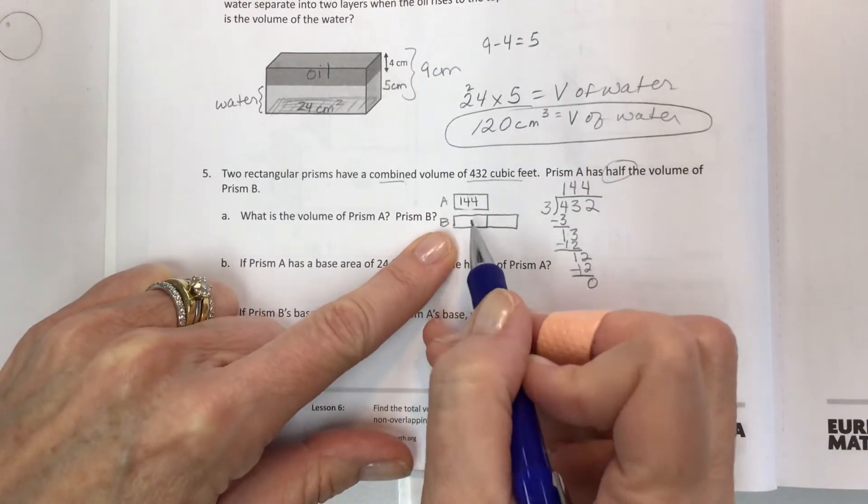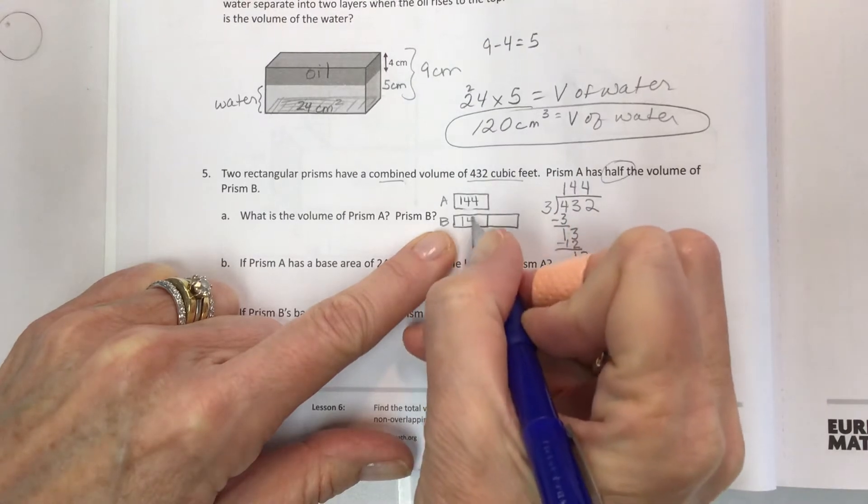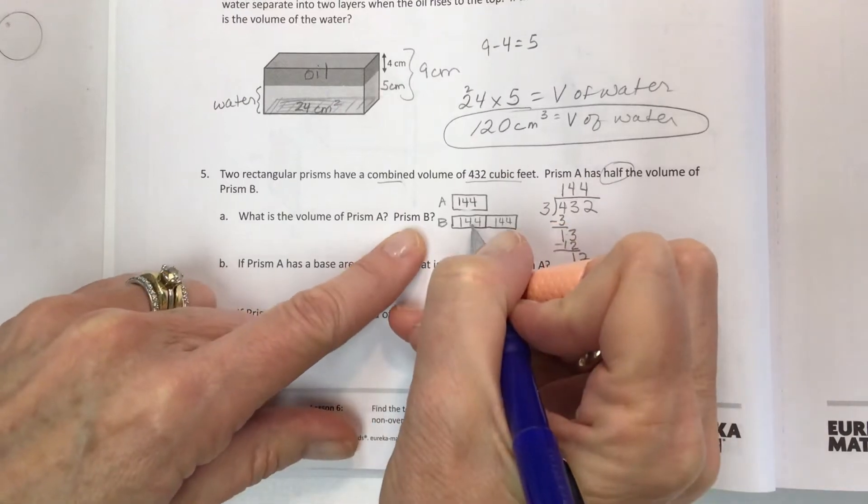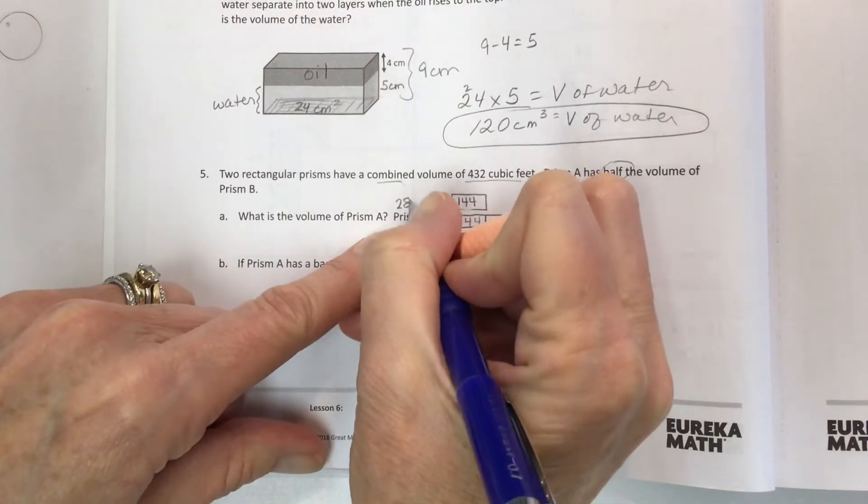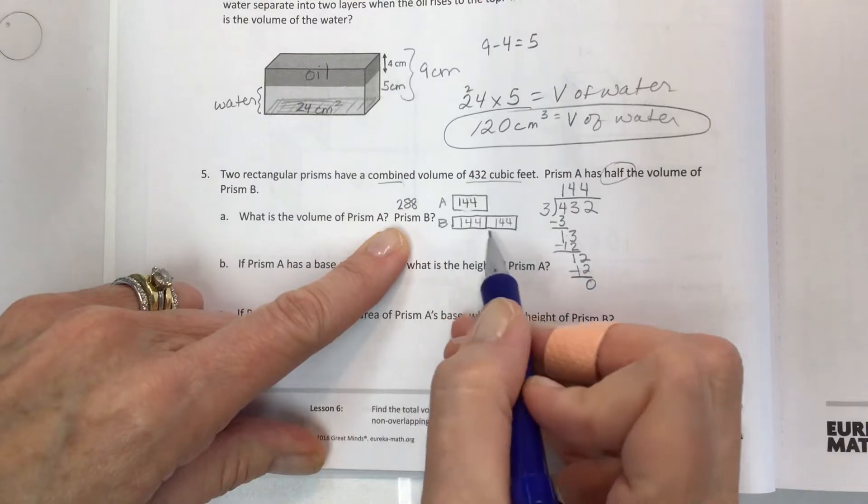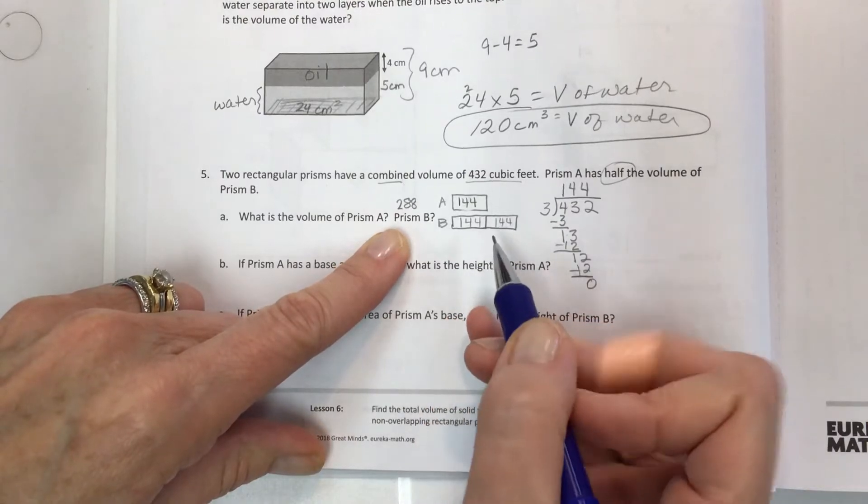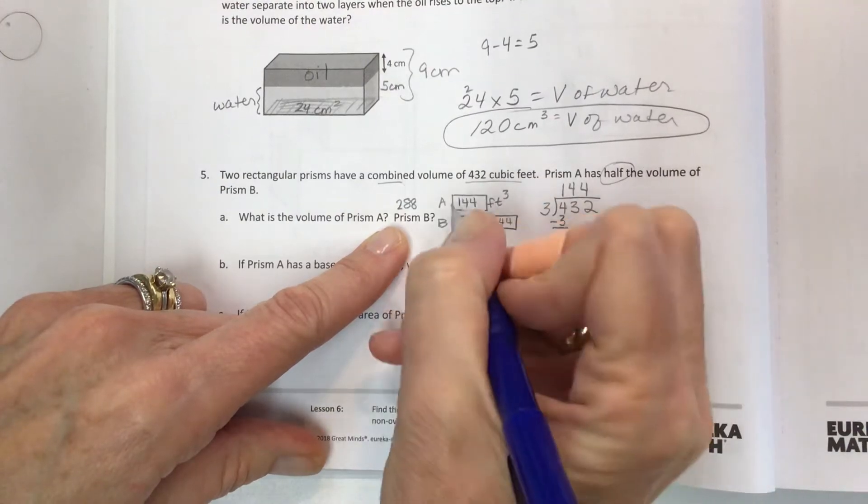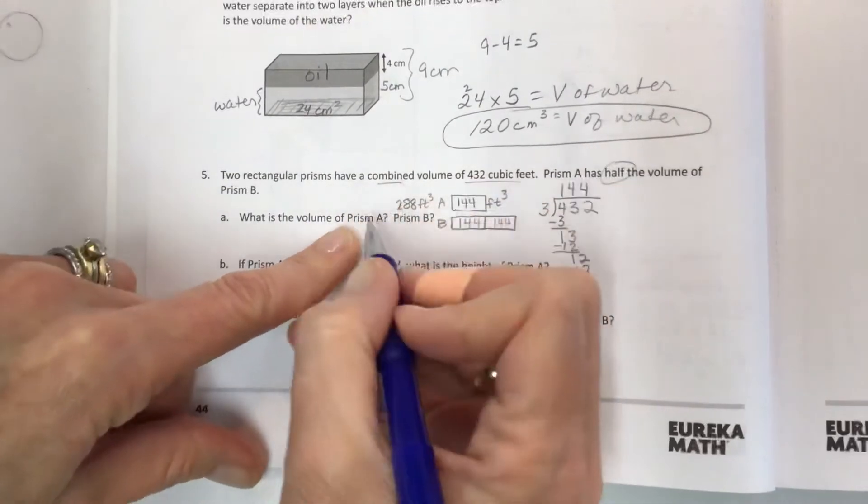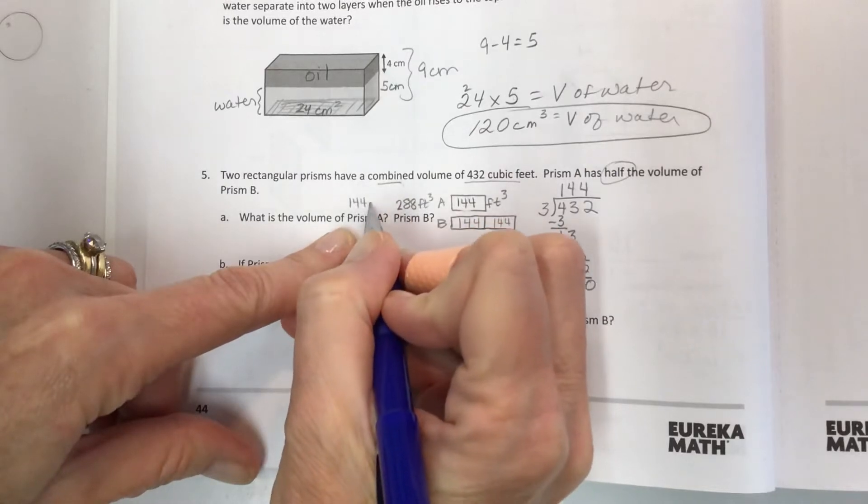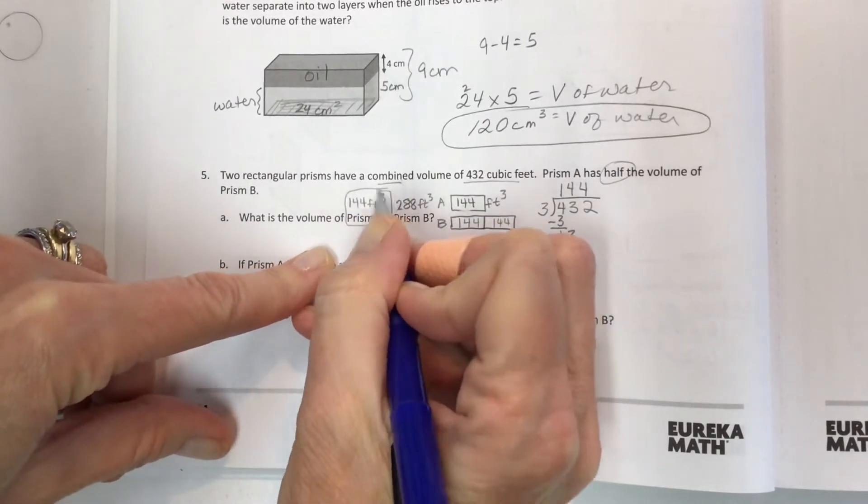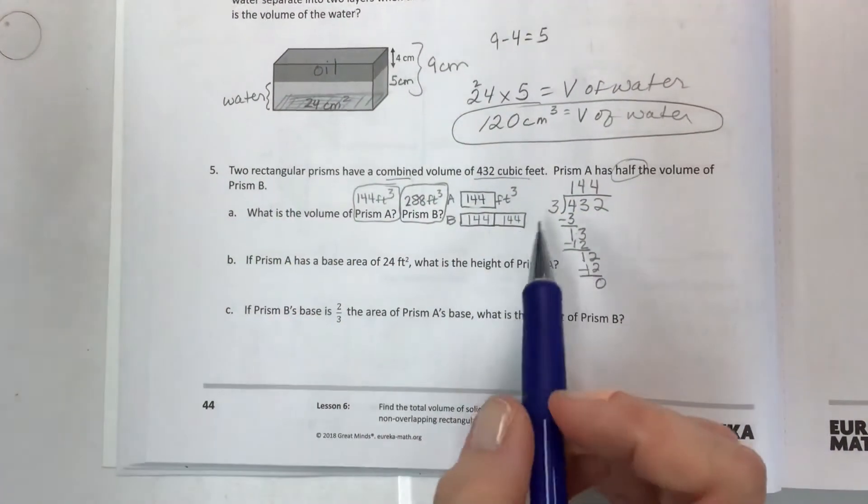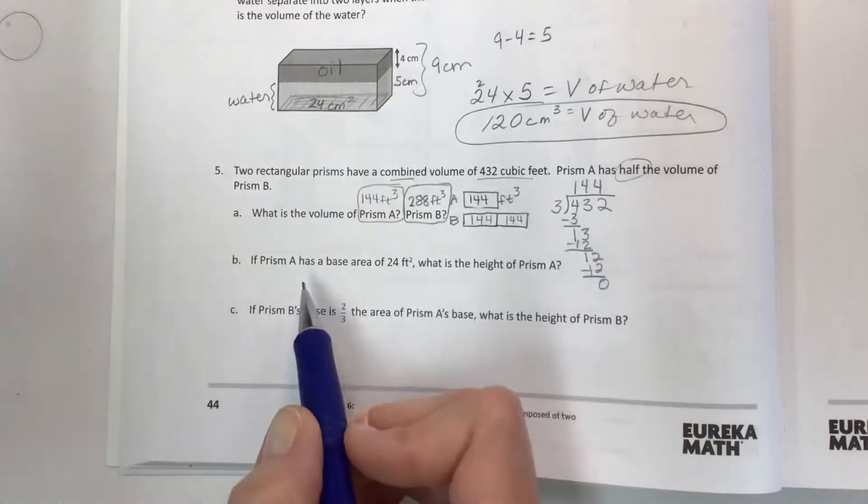So each part is 144 for the volume, feet cubed for prism A. And then each part is 144, so if I have 144 twice, the total volume of prism B would be 288 because you are doubling that. Don't forget to label it feet cubed.